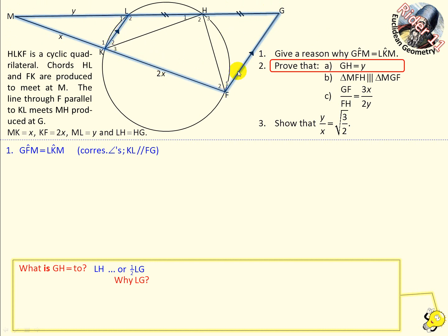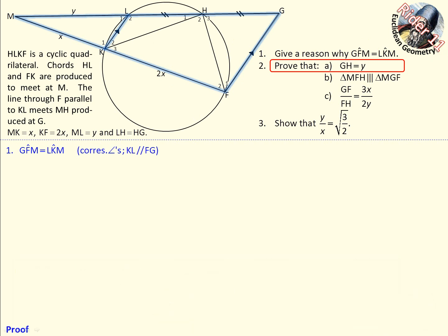LG is a segment within a proportional intercept theorem situation, where because of these parallel lines, ML over LG equals MK over KF. LG, because that's the one we're finding, over ML equals KF over MK. There it is there. Proportional intercept theorem. And if we substitute the values of x and y, we end up with LG equal to 2y, and that means we can find GH.